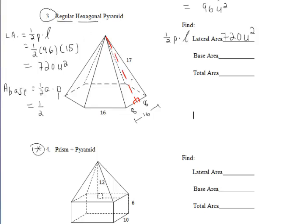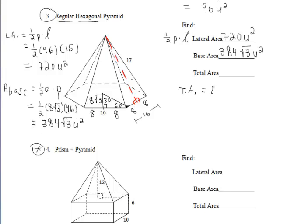Next, we need to find the area of the base. Since this is a regular polygon, we can do one-half apothem times perimeter. We don't have the apothem given, so we must find it. When we draw in the segment to the side, it breaks the 16 into 8 and 8. Since each interior angle of a regular hexagon measures 120 degrees, drawing in the radius creates a 30-60-90 triangle, making our apothem 8 radical 3. With the perimeter of 96, the base area is 384 radical 3 units squared.